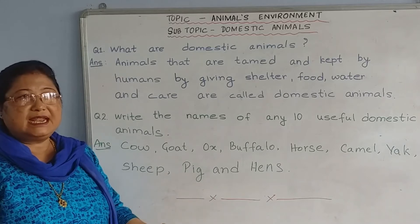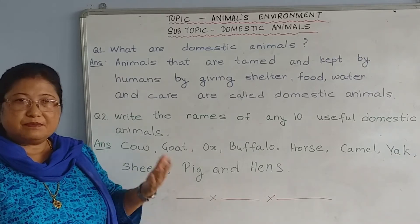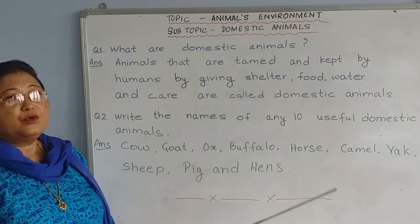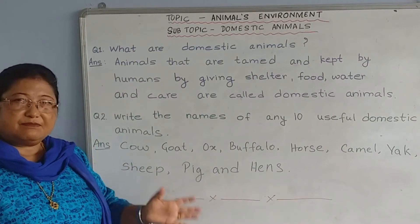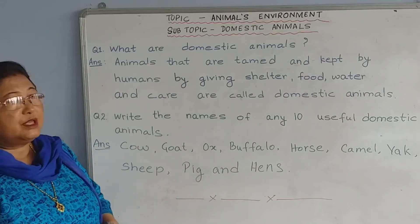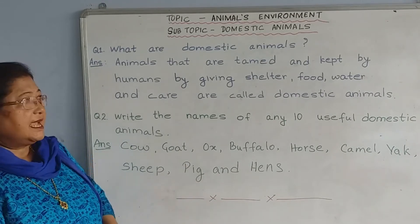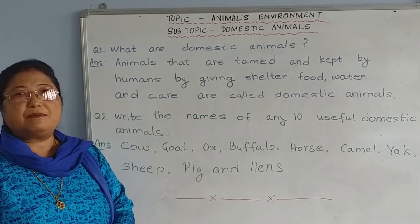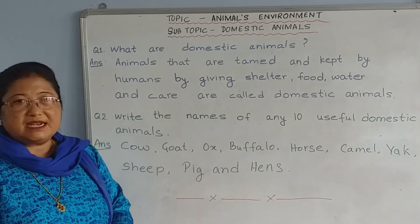Domestic animals we keep in our home. We make them shelter — shelter means home. We provide them food, whether cooked food or cut grass, and we give them water. We also have to take care of them. If they become sick, we take them to the hospital and give them medicines.